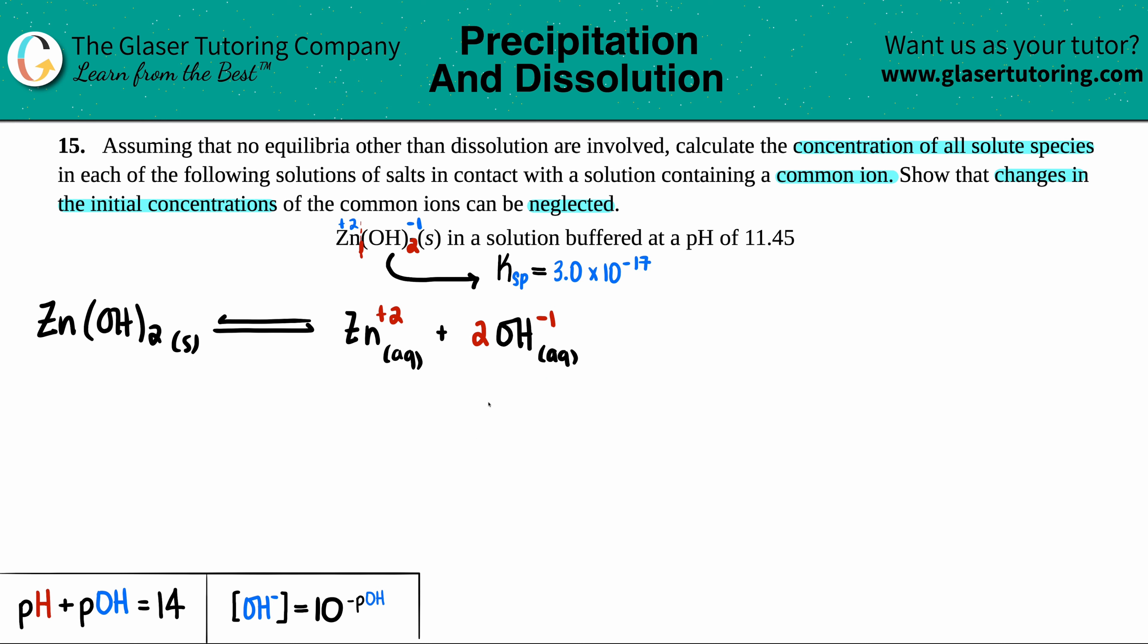There's one zinc, one zinc, but two hydroxides. So I have to put a two in front of here. Next thing we're going to do is we're going to use the equation to do the general Ksp formula. It's just the Ksp equals the products raised to the coefficients. So Ksp equals the concentration of zinc plus two times hydroxide OH minus. There was one zinc, so I don't really have to raise that one, but there's two hydroxides. So I have to raise the hydroxide to a two. The Ksp value we got was 3.0 times 10 to the negative 17th.